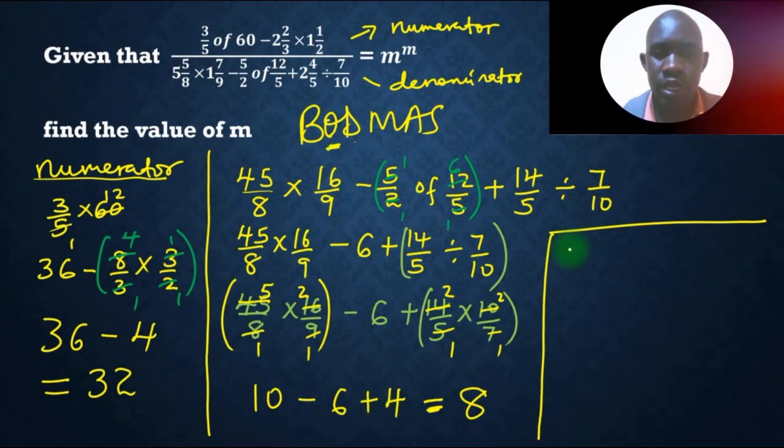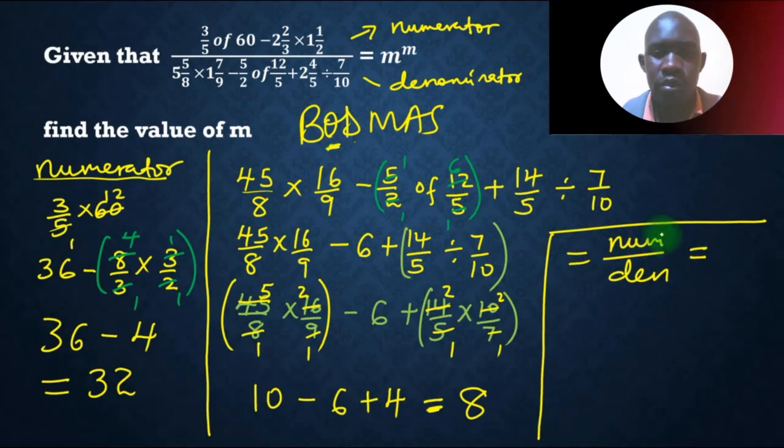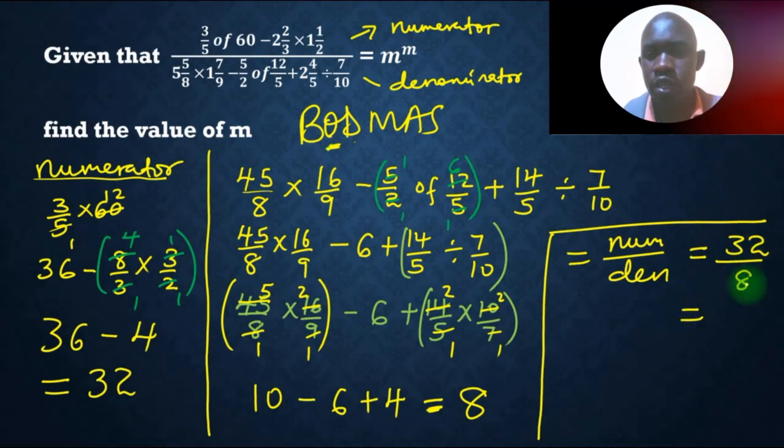Finally, now we can have our numerator, we divide by the denominator, and numerator is 32, and denominator is 8. So, 32 divided by 8, we get 4.